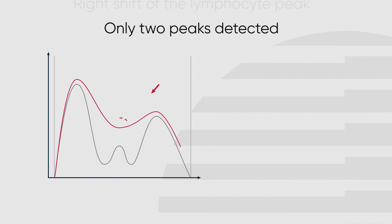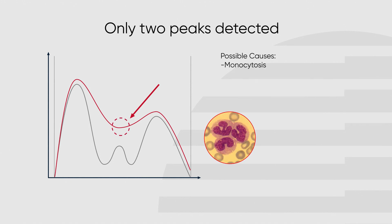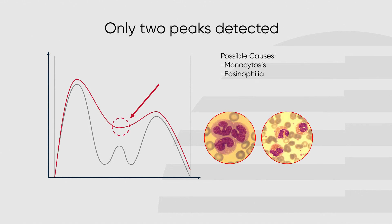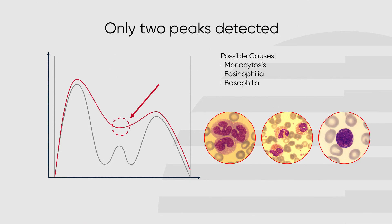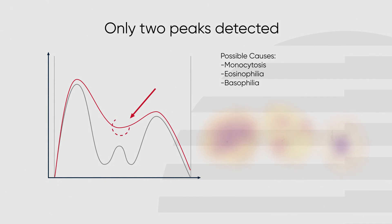An elevation in the midsection of the histogram could have several possible causes, such as monocytosis, eosinophilia, and basophilia. The high increase of mid cells causes the lymphocyte and granulocyte peaks to merge and the analyzer is unable to distinguish between the populations. If this occurs, the instrument may show an OM flag; proceed to confirm the abnormality in smear.